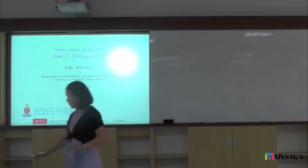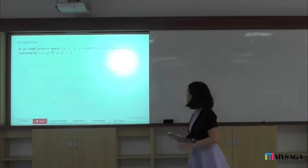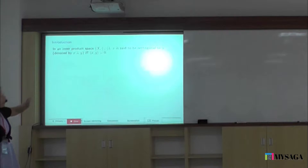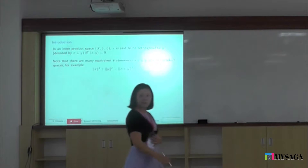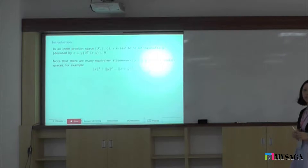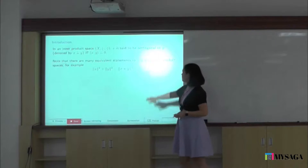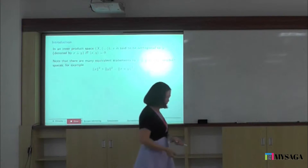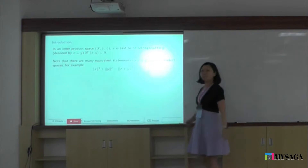We saw this yesterday, maybe in your algebra class. In an inner product space X, a vector x is said to be orthogonal to y — that's your notation — if and only if their inner product is zero. But if you look at inner product spaces, there are many equivalent statements to the statement that x is orthogonal to y. For example, norm x squared plus norm y squared equals norm x plus y squared. Now, if I were to generalize the notion of orthogonality and look at this, there's no inner product there. So what's stopping me from using this as a definition?